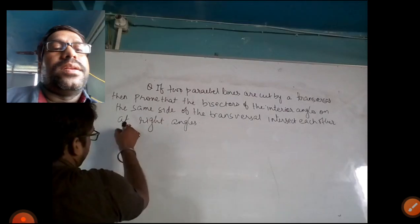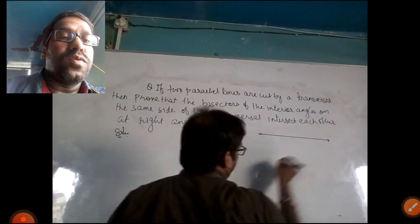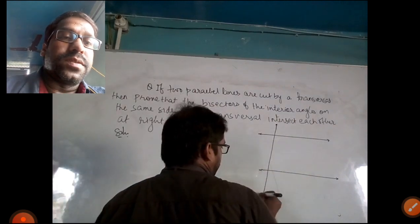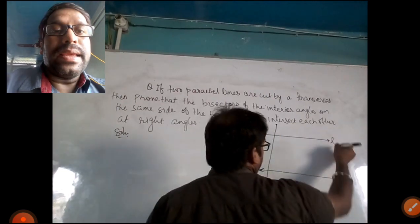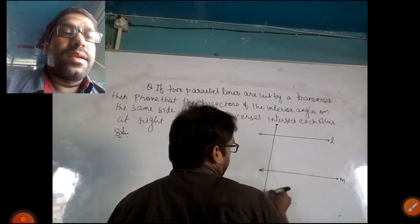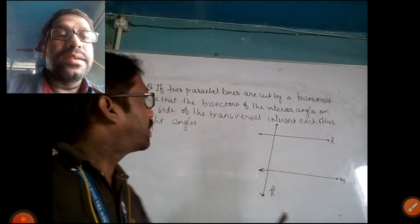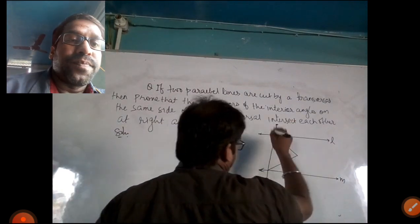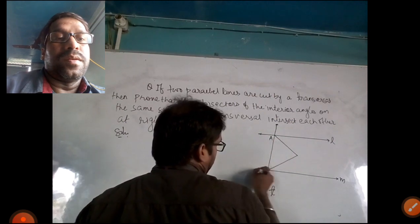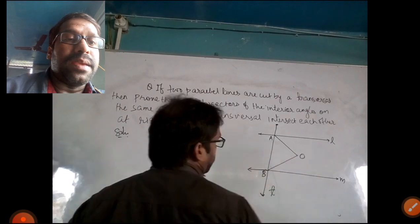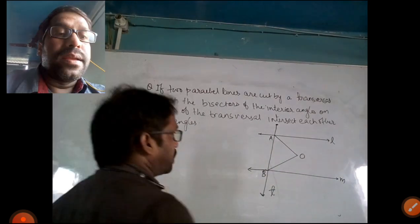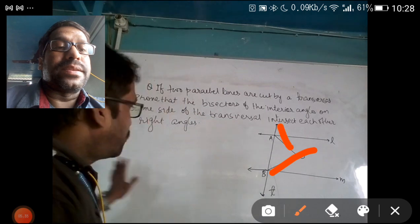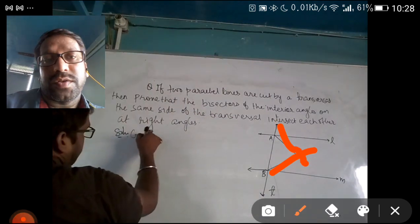First of all, what is given here? We will draw the figure. Two parallel lines are given and these parallel lines are cut by a transversal. The bisectors of the interior angles on the same side of the transversal — these interior angles are A, B, and O. BO is the bisector of angle B, and AO is the bisector of angle A. Just now I explained what angle bisector means.